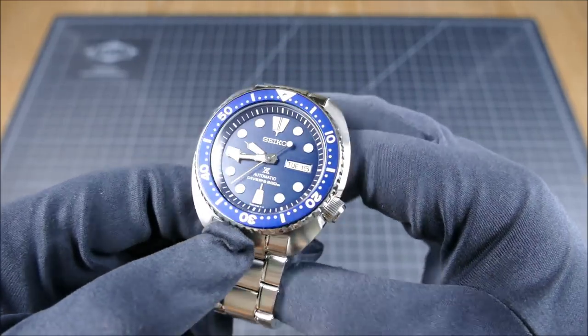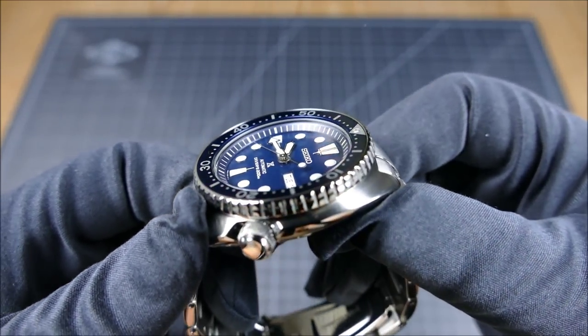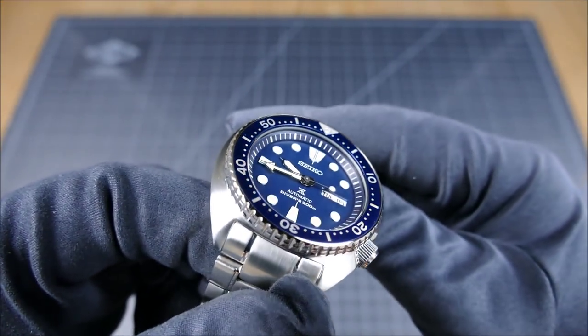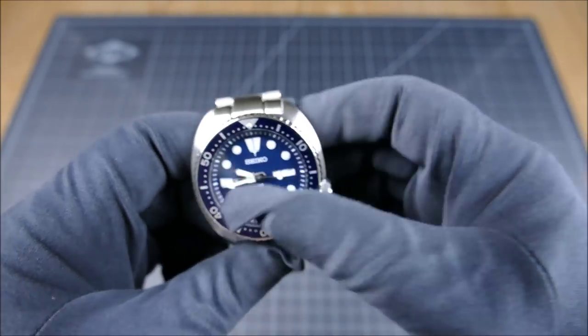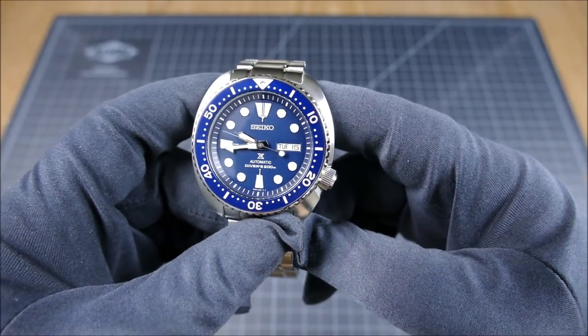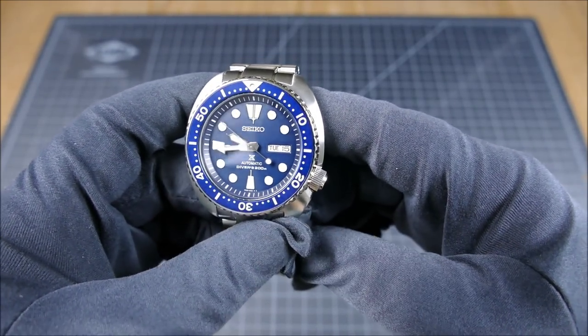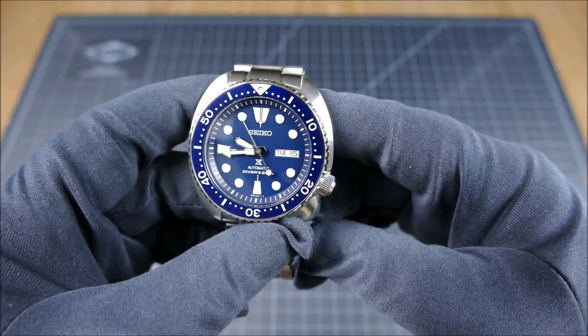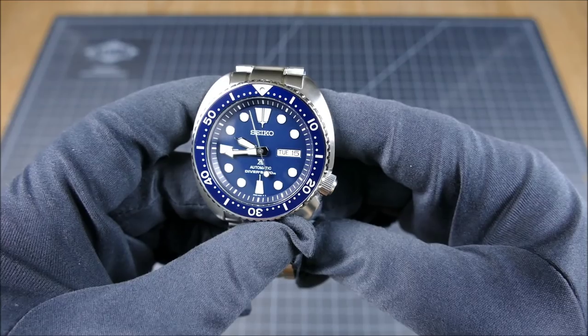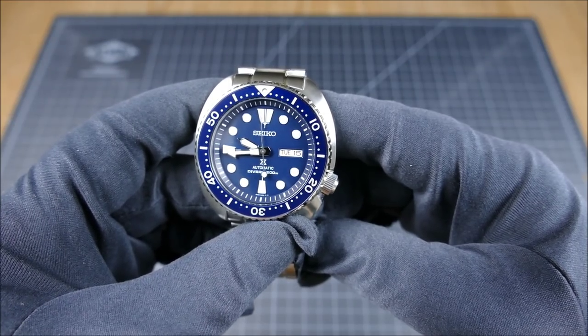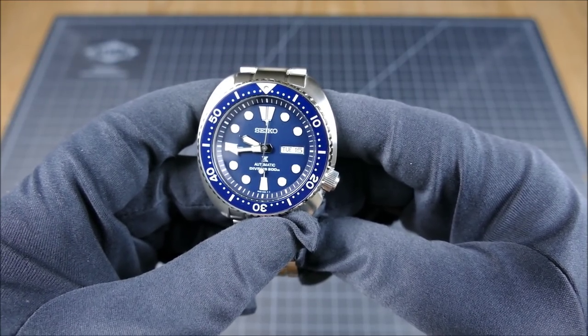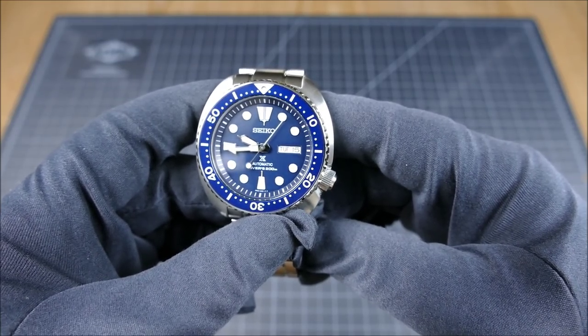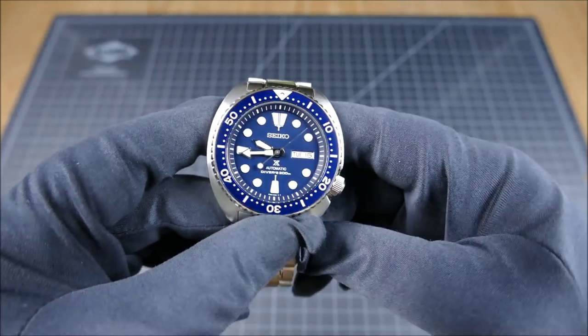As far as lume goes, it has Seiko's proprietary LumiBrite which is very nice and thickly applied—definitely great lume application. On the dial there it is 200 meters water resistant and it does rate the Divers 200 meters wording, which means it meets or exceeds the ISO standards. That's always a nice feature to have.